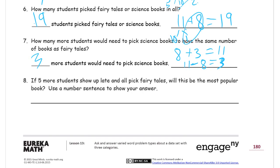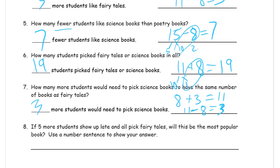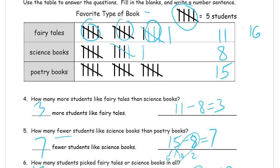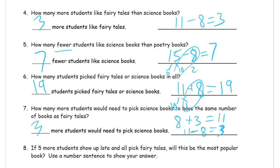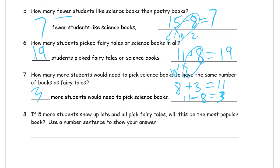If five more students show up late and all of them pick fairy tales, will this be the most popular book? Five more students picked fairy tales, so we add five more tally marks: five, ten, fifteen, sixteen. That would be sixteen, which is one more than the poetry books, so yes, it would be the most popular. The number sentence is 11 plus 5 equals 16.